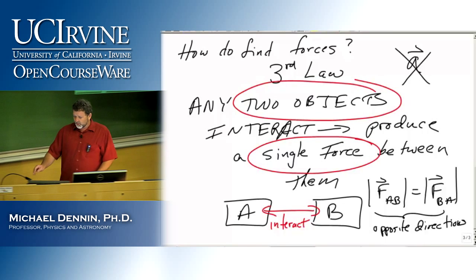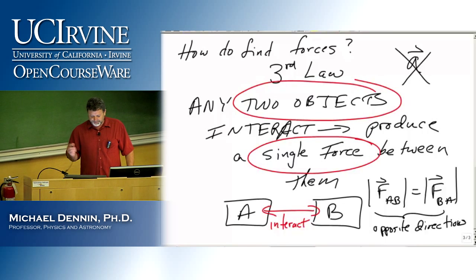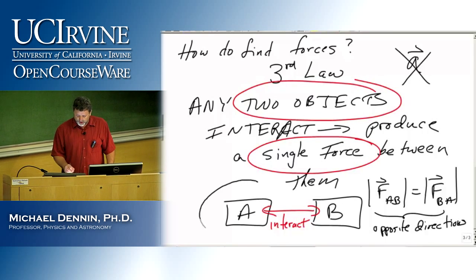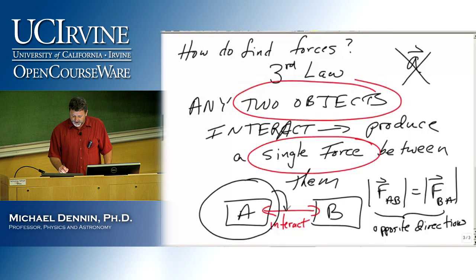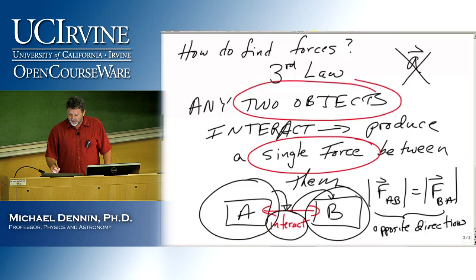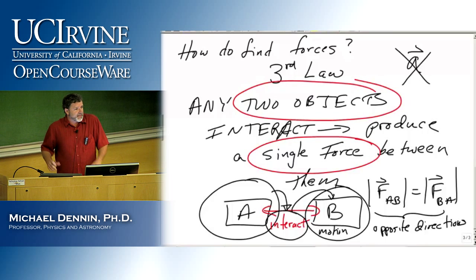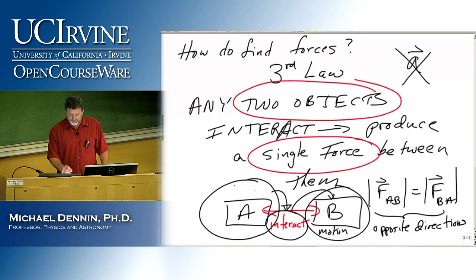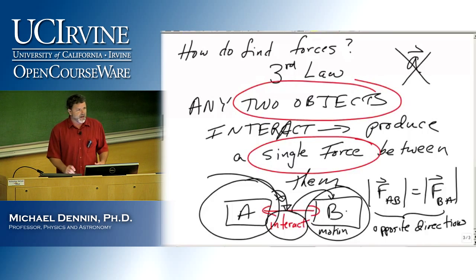You might end up, in the course of a problem, finding out all about A so that you can find what this force is, so you can find what that force is on B, and then using the second law to find the motion of B. So you might be going through multiple steps, but this connecting force — the third law idea — is always just to find all the forces on A and B.